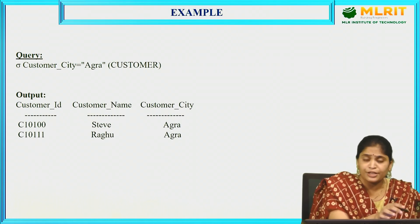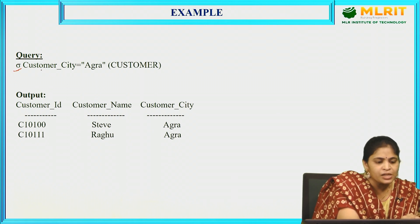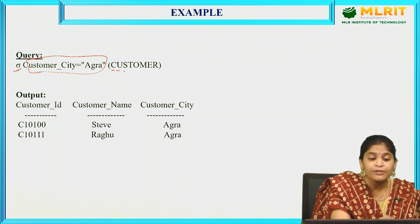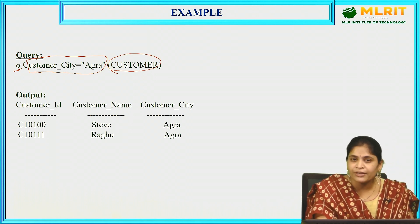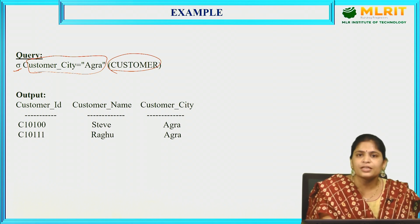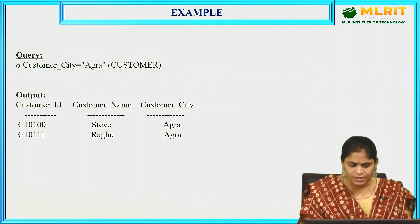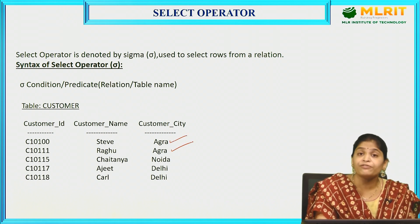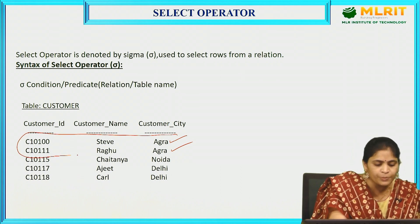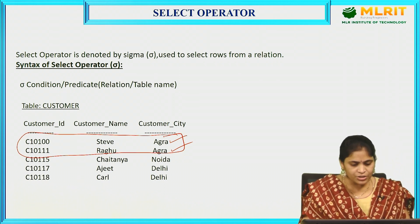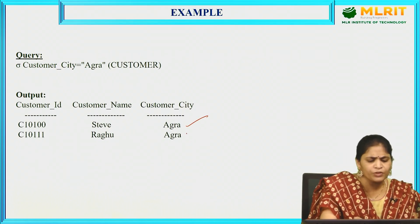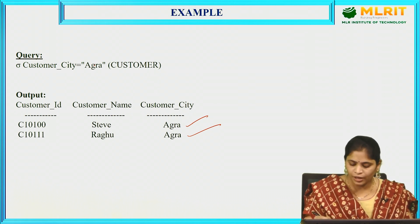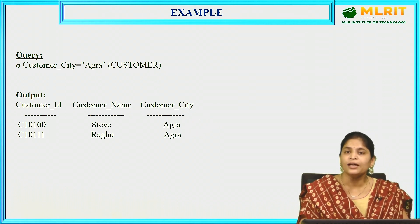Here is another example: σ(customer_city = 'Agra')(Customer). This retrieves all rows where the customer city equals 'Agra'. Since there are two such rows in the table, both rows will be retrieved as the output. Based upon the condition, only the matching rows are selected.